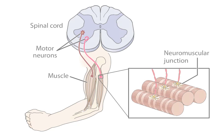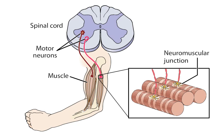Acetylcholine also acts at a variety of postsynaptic targets in the peripheral nervous system, preeminently at the neuromuscular junction of striated muscles and in the visceral motor system.